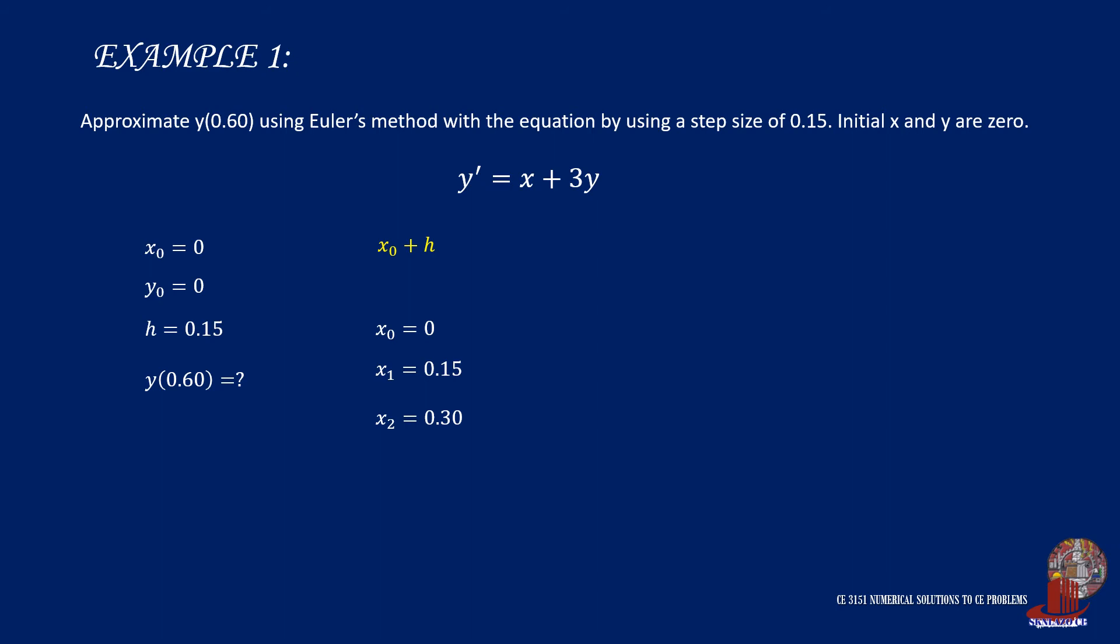So as you have concluded, x3 will be 0.3 plus 0.15, which equals 0.45. Then x4 will be 0.60.